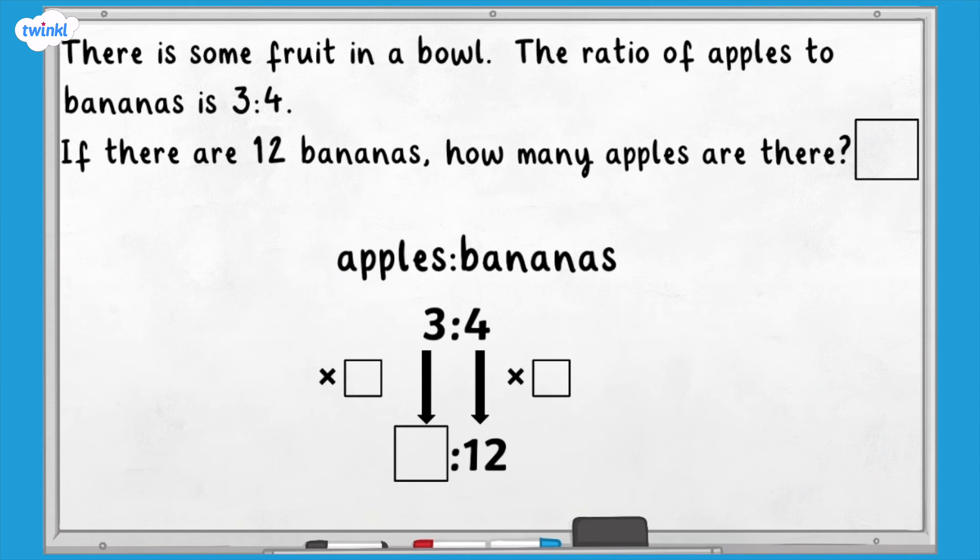We multiplied the number of bananas in the ratio by three to get 12. If we also multiply the number of apples in the ratio by three, we get nine. If there are 12 bananas, there are nine apples.